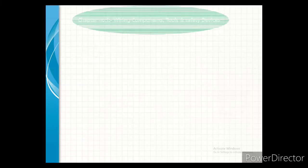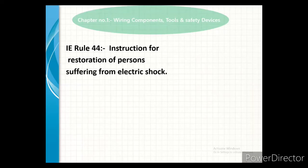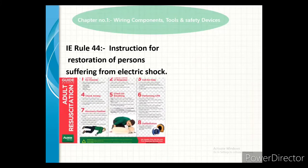Our next rule is Rule number 44, instruction for restoration of a person suffering from electric shock. Instructions for restoration of a person suffering from electric shock shall be attached in a noticeable place in every generating station. This notice mentions all the methods of restoration of a person from electric shock.